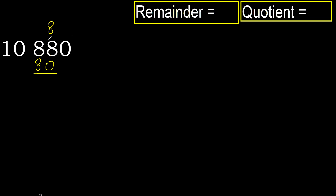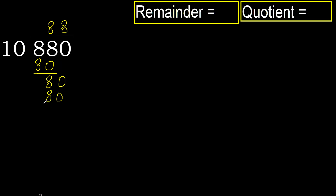Subtract. 88 minus 80 is 8. Next, 80. 10 multiplied by 8 — 80 is not greater, okay. Subtract.